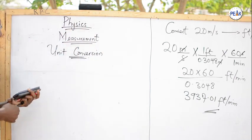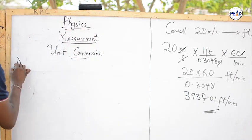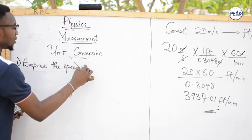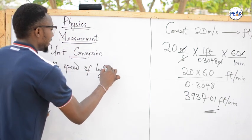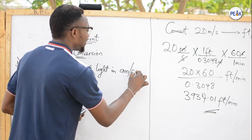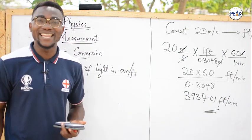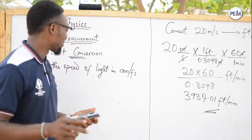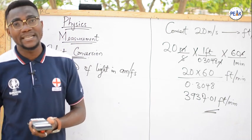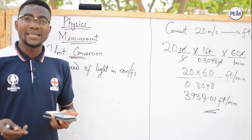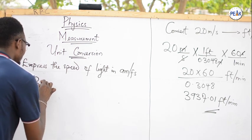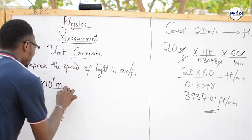Let me give one more example before I give you some questions to work with. Express the speed of light in attometers per femtosecond. Don't be scared — we are going to solve it right now. The first thing you need to know: the speed of light is approximately 3 times 10 to the power 8 meters per second, or 300 million meters per second. So we write: 3 times 10 to the power 8 meters per second, and we are going to attometers per femtosecond.